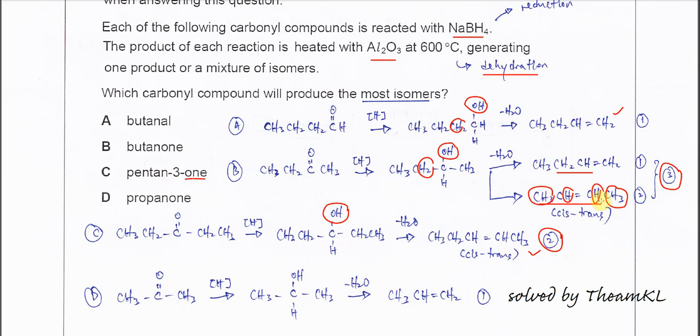Okay, so means B still the most isomers so far. D, if you understand how the thing works, you should know it will not really form a lot of isomers. So propanone, after reduction, will form this alcohol, and this OH will remove with this H or this H—same—to form propene. So it just can form one isomer, no cis-trans. Therefore, answer is B because it can form three isomers. So that's all for this question, thank you.